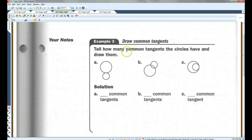Tell how many common tangents the circles have and draw them. A common tangent is a tangent that the circles share. For example, this one, if I drew a tangent like this, that would be a common tangent because it intersects both circles once. You could also draw a tangent like that, or like this. I think that's the only way. So this one has three common tangents.